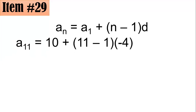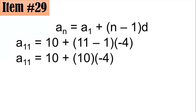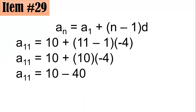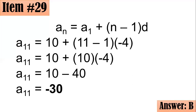For the 11th term, n equals 11: a sub 11 equals 10 plus (11 minus 1) times negative 4, which simplifies to 10 plus 10 times negative 4, which is 10 plus negative 40, equaling negative 30. Letter B.